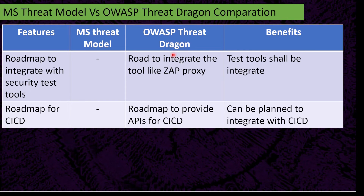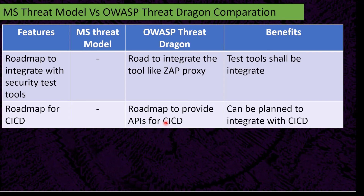OWASP Threat Dragon has a roadmap to integrate with security testing tools such as ZAP Proxy and other testing tools that can be integrated with the threat model. Additionally, OWASP Threat Dragon has a roadmap to provide APIs to integrate with CI/CD, so we can plan to integrate it with the CI/CD pipeline.